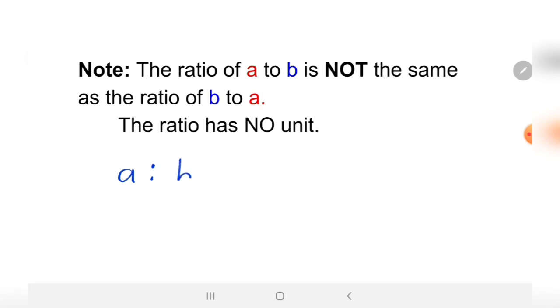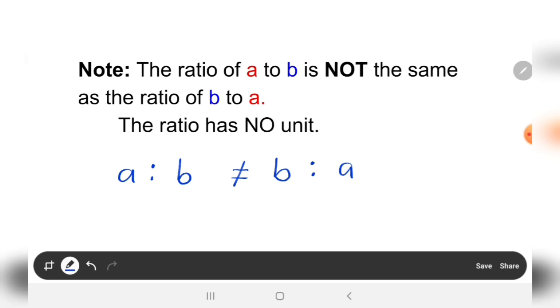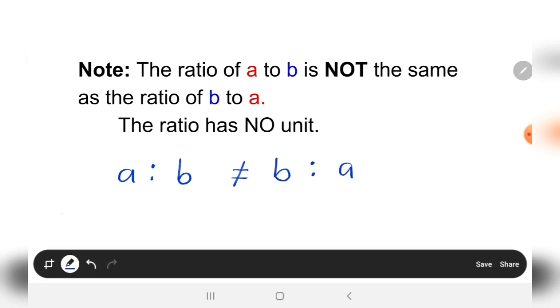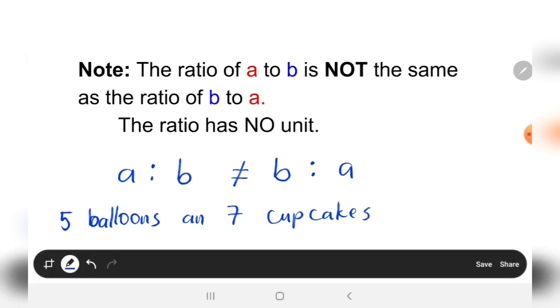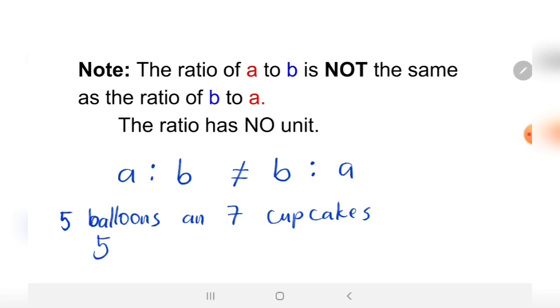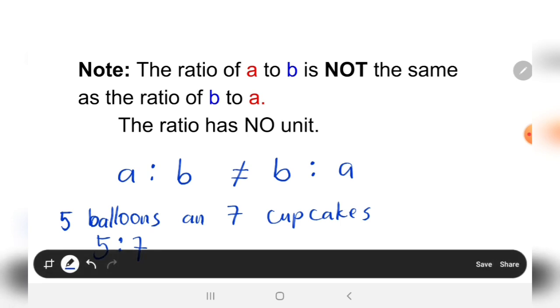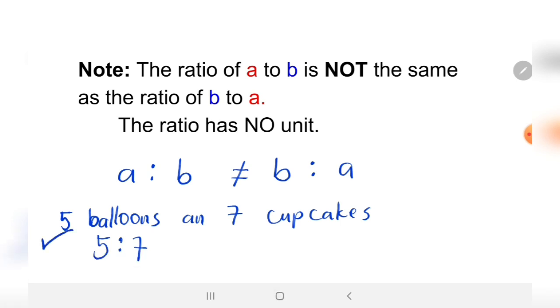For example, there are five balloons and seven cupcakes. The correct ratio is five to seven. This is correct. How about if you're going to write seven to five - is this correct?